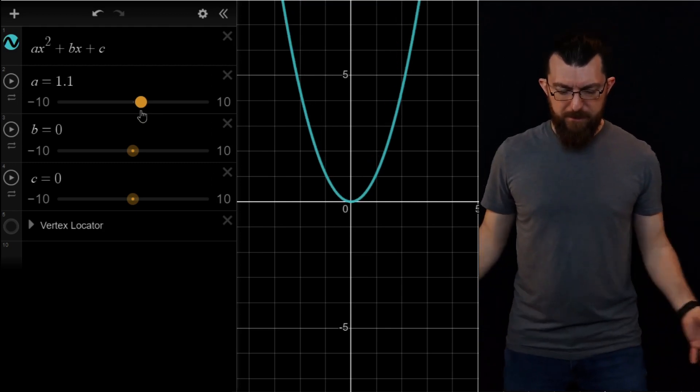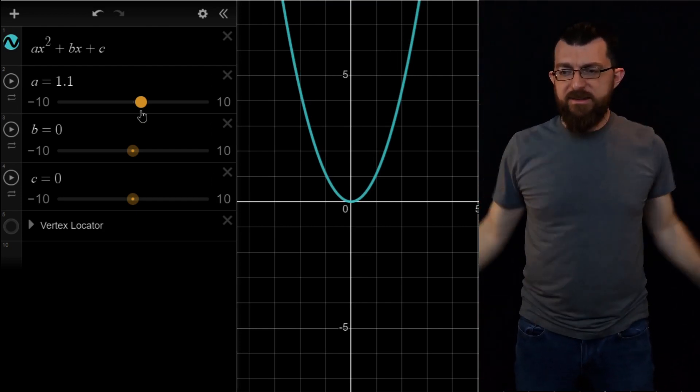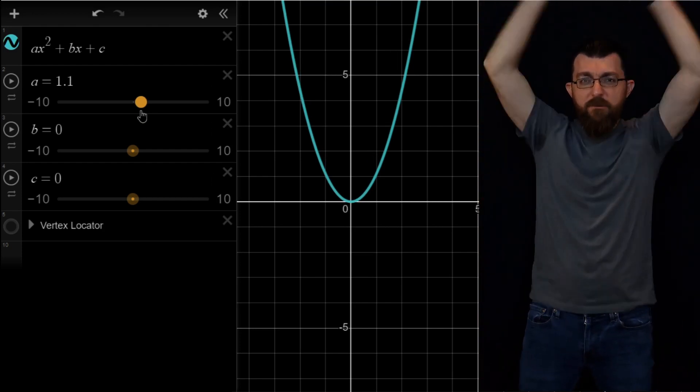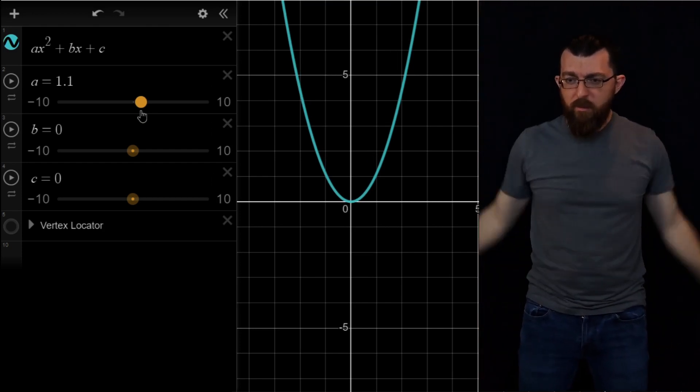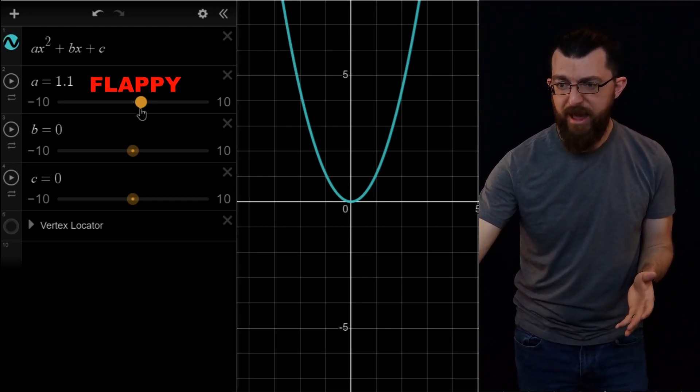It's kind of like, it's almost like your arms while you're doing jumping jacks. It's making it do some sort of flappy motion. So what are we going to call a? That's the flappy slider. A makes the parabola flappy.